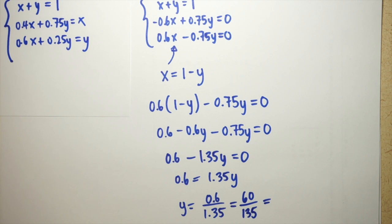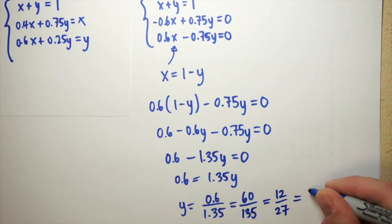So we got down to the solution here, and y is equal to 0.6 over 1.35, which we can just write as a decimal, or if we want it in terms of fractions, we do a little bit of reduction, and we end up with y equals 4 ninths.